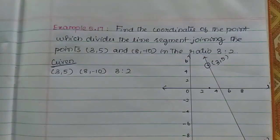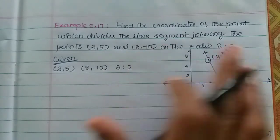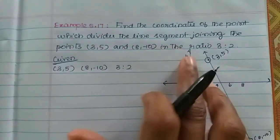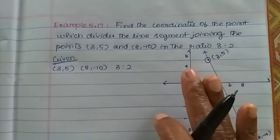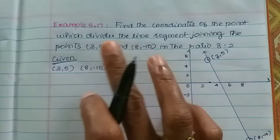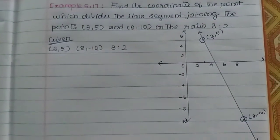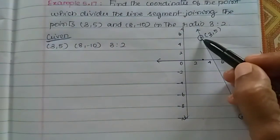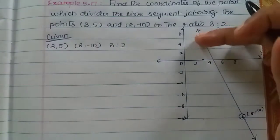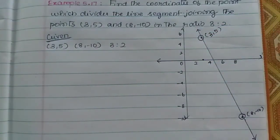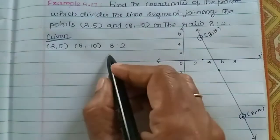For example 5.17: find the coordinates of the point which divides the line segment joining the points (3, 5) and (8, -10) in the ratio 3 is to 2. The line segment joins (3, 5) and (8, -10), and a point divides it in the ratio 3 is to 2.